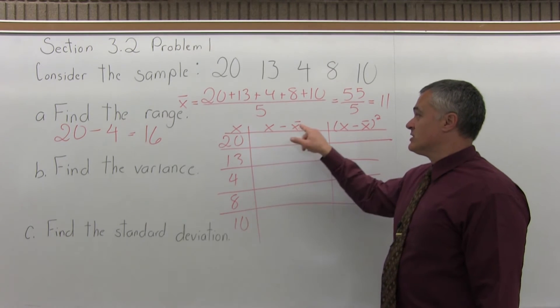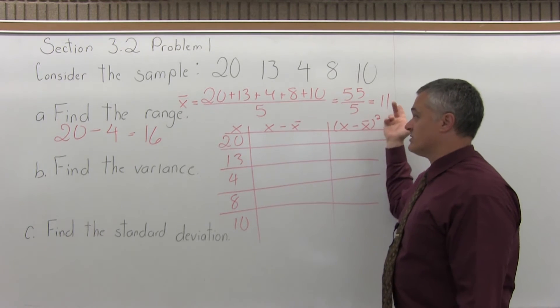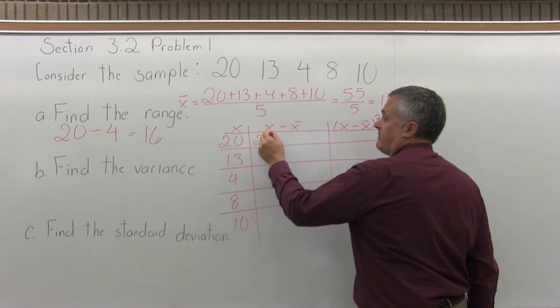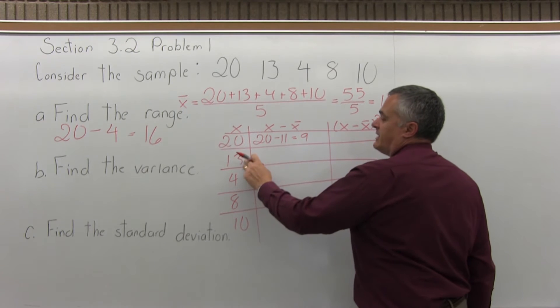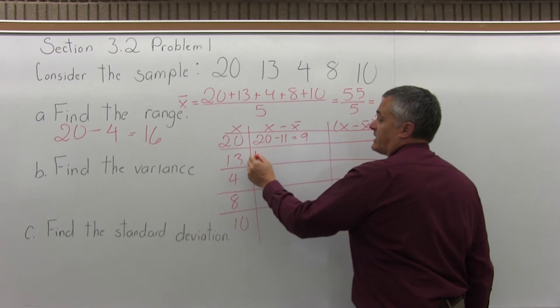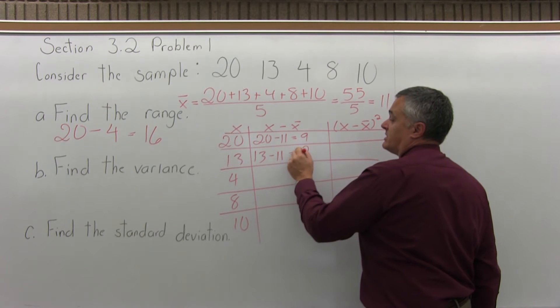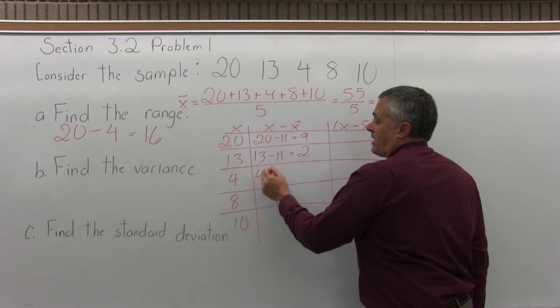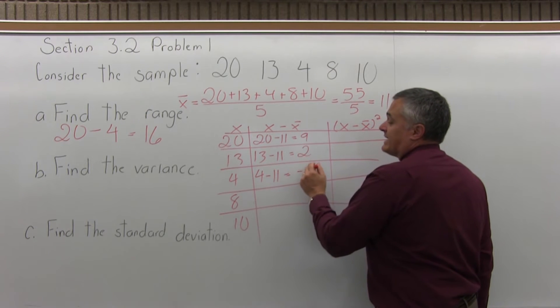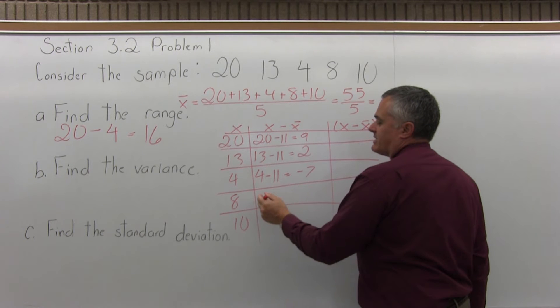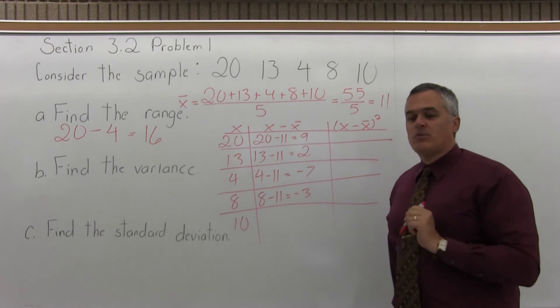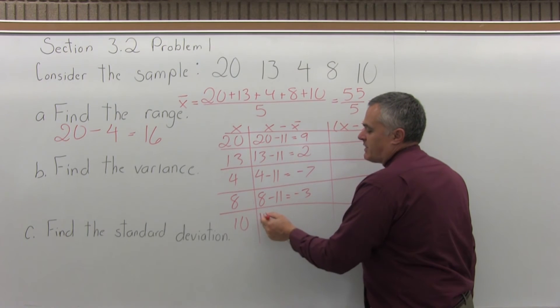And then from each one of those data values, subtract off the x-bar, which is 11, from step 1. So in the top row, x minus x-bar will be 20 minus 11, which is positive 9. In the next row, x is 13, so x minus x-bar is 13 minus 11, which is positive 2. In the middle row, x is 4, so x minus x-bar is 4 minus 11, which is negative 7. And the next row down, x is 8, so x minus x-bar 8 minus 11 is negative 3. And finally, in the bottom row, x is 10, so x minus x-bar is 10 minus 11, which is negative 1.